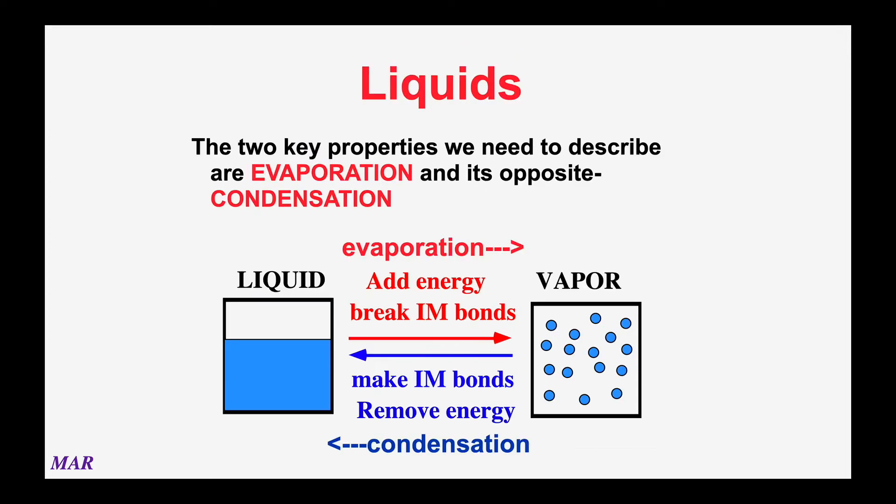If you're going to turn a liquid into a gas, you have to break the intermolecular forces in the liquid. Remember, liquids and solids have intermolecular forces but gases do not. Breaking intermolecular forces requires energy, so going from a liquid to a gas is endothermic — it takes energy to make that happen. The common term for turning a liquid into a gas is evaporation, and evaporation is endothermic.